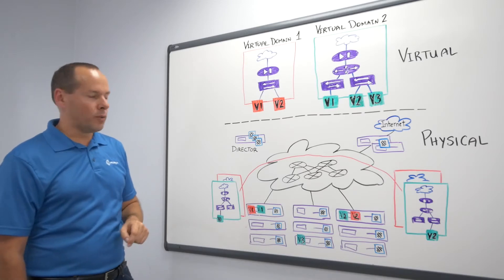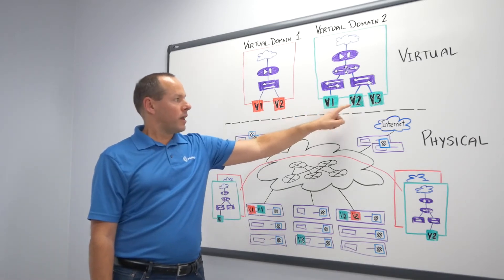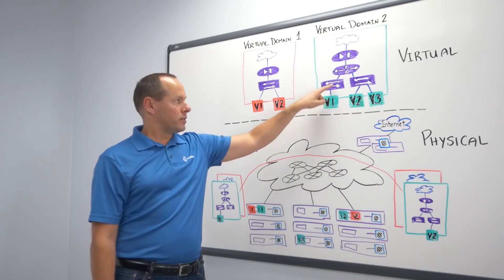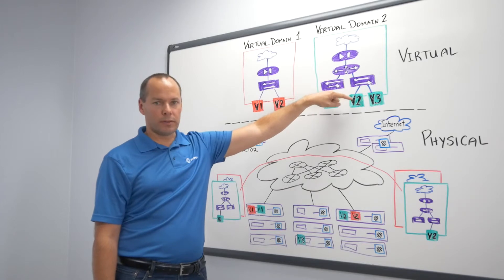This time again, virtual machine 1 would like to communicate to virtual machine 2. And to do that, virtual machine 1 needs to go through its bridge, to the router, to the bridge, and then to virtual machine 2.